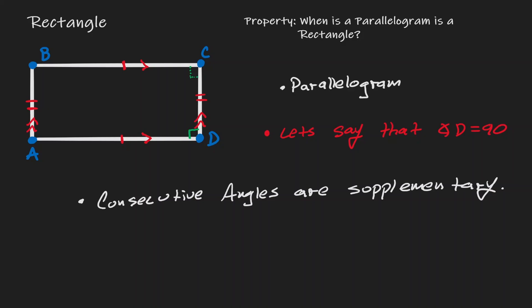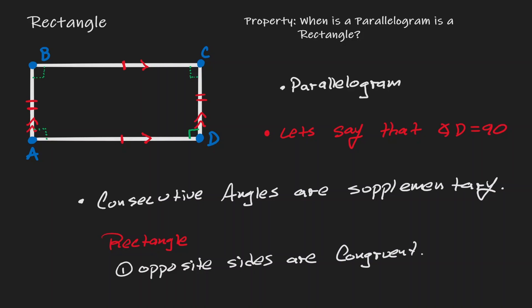We can also say the same about angle B. If angle C is 90 degrees, then angle B is 90 degrees as well — they're consecutive and supplementary. And if angle B is 90 degrees, then angle A is 90 degrees as well. We have now shown enough information to claim this is a rectangle: opposite sides are congruent (from the parallelogram property), and all interior angles are 90 degrees. It is sufficient to have just one angle equal to 90 degrees for all angles to be 90 degrees. If these two conditions are fulfilled, we can claim the parallelogram is a rectangle.